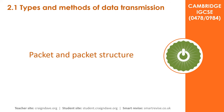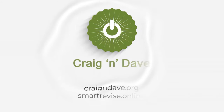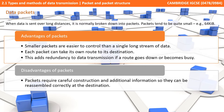In this video we explain what a packet is and packet structure. When data is sent over long distances it's normally broken down into packets, and packets tend to be quite small in size. The advantage of doing this is that smaller packets are easier to control than a single long stream of data. Each packet is therefore also able to take its own route to the destination, and this adds redundancy to data transmission if a particular route goes down or becomes busy.